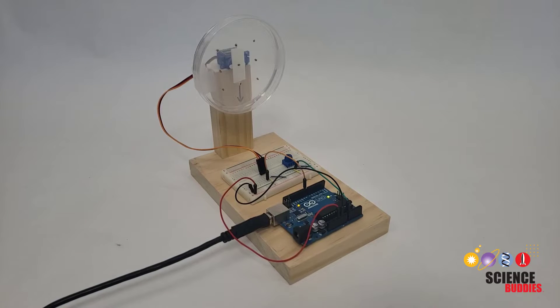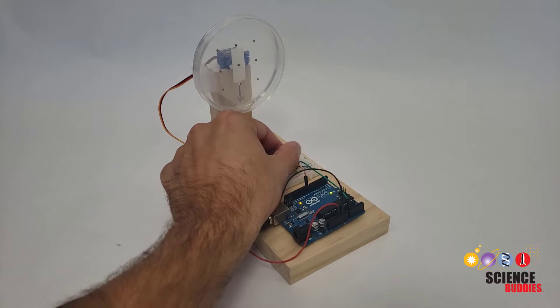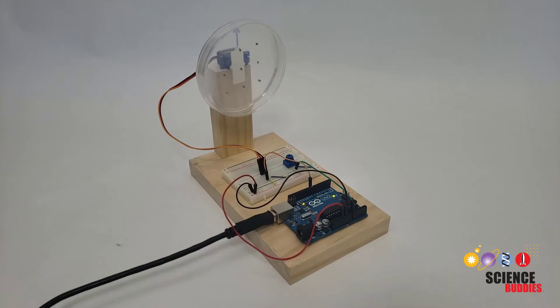Make a clinistat, a rotating device that simulates zero gravity so you can do experiments to see how plants will grow in space.